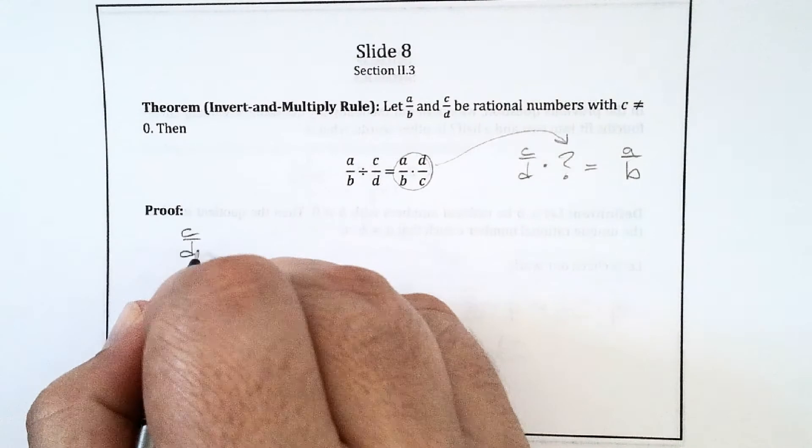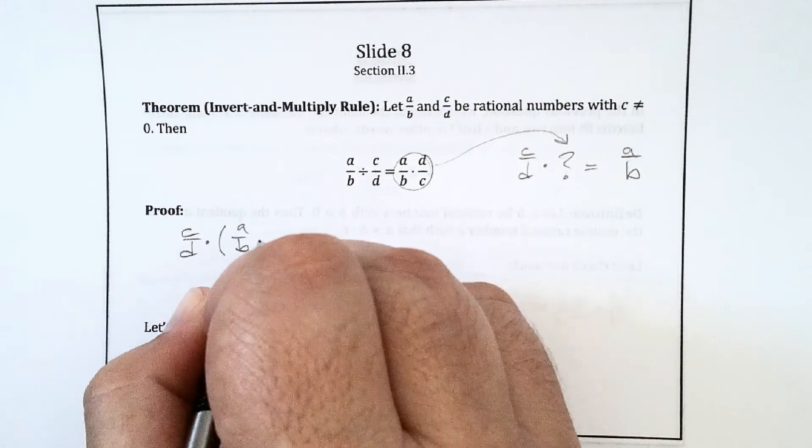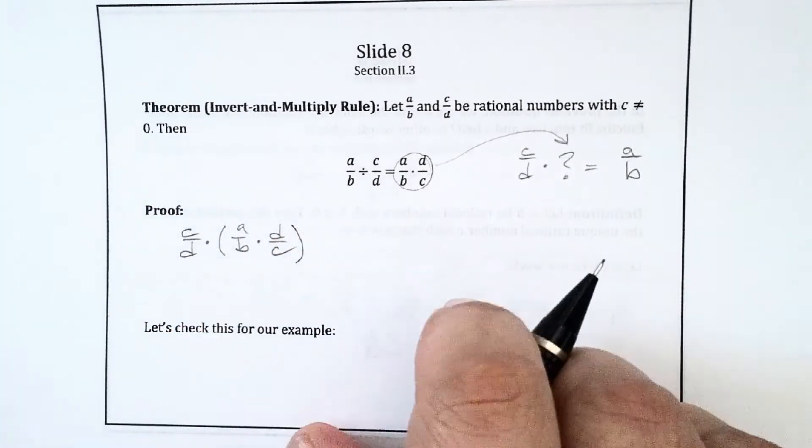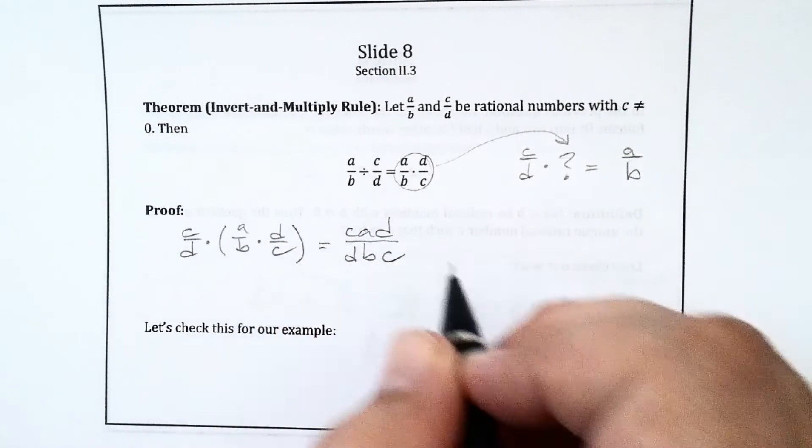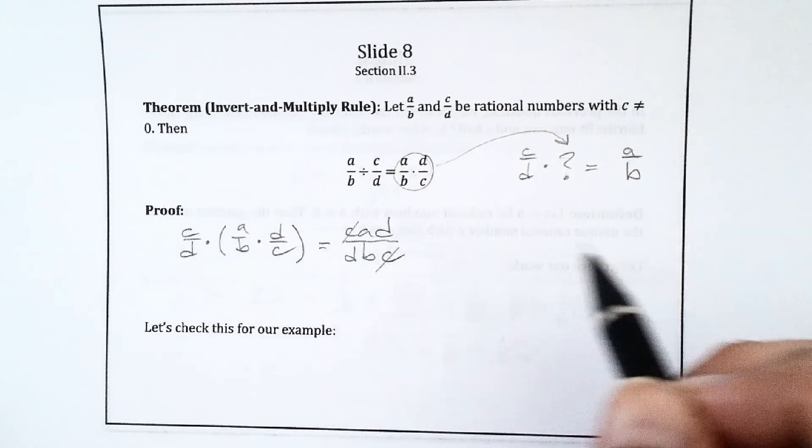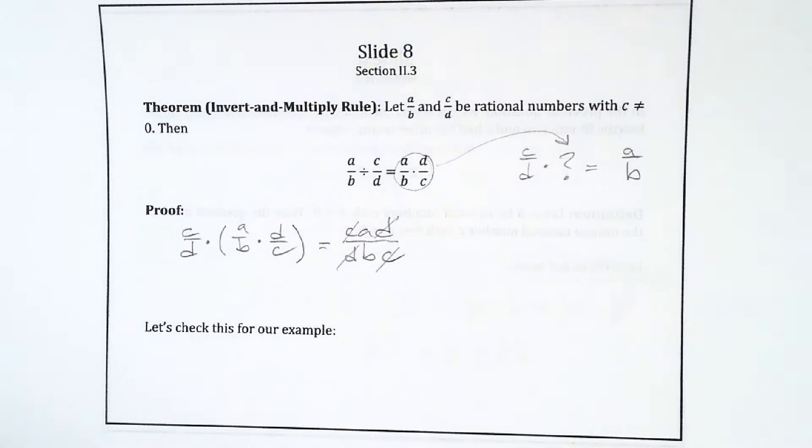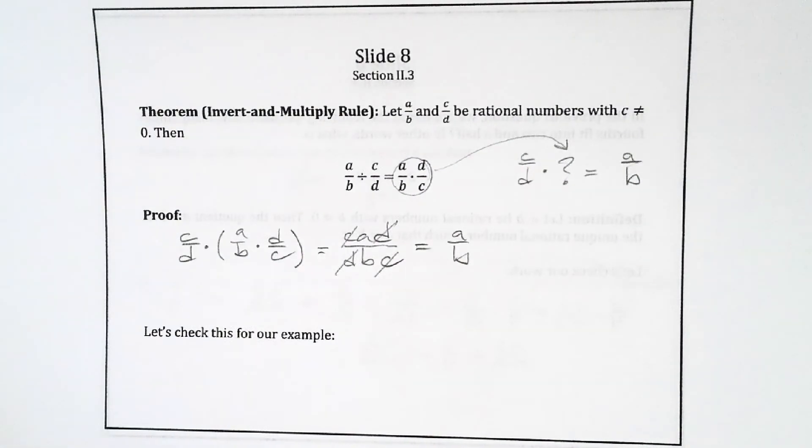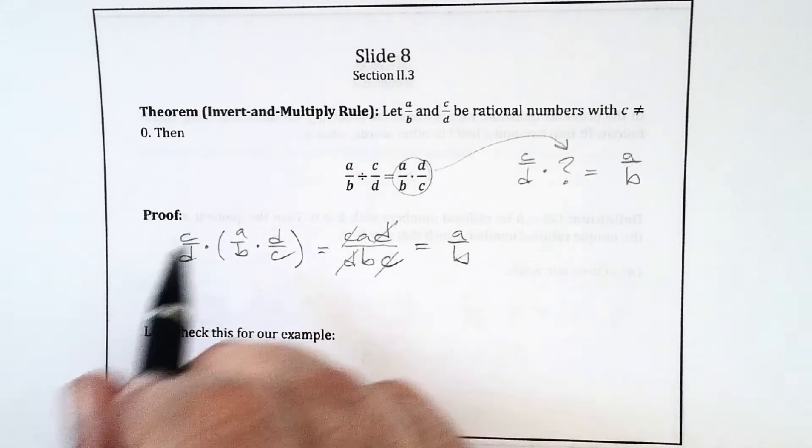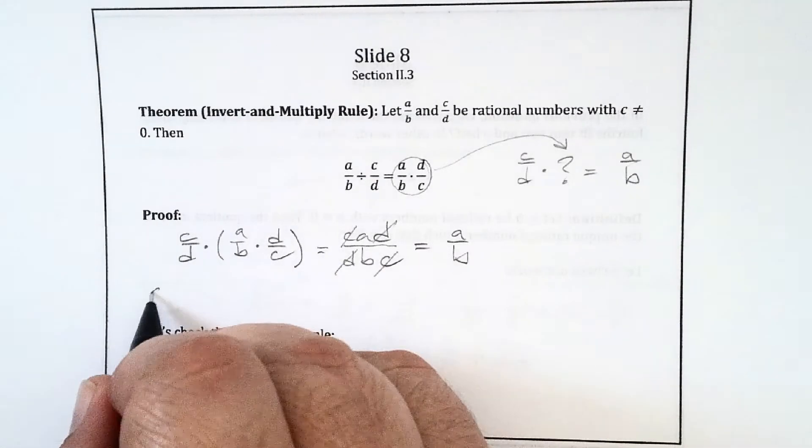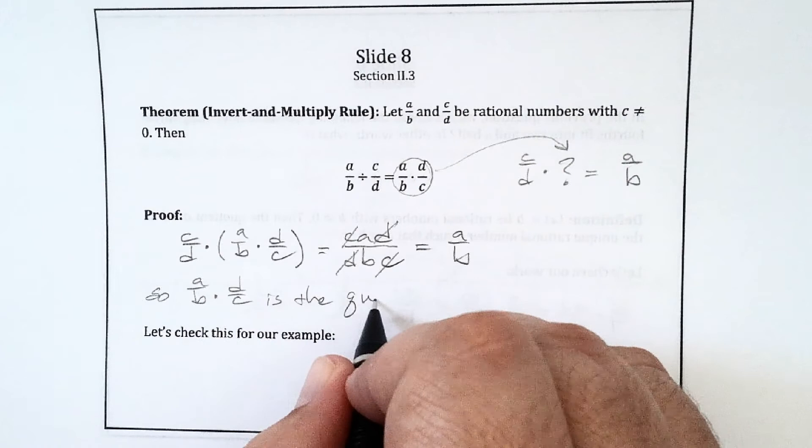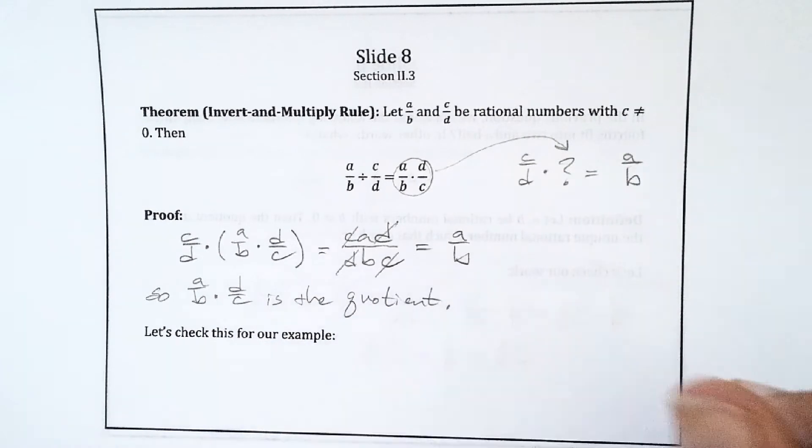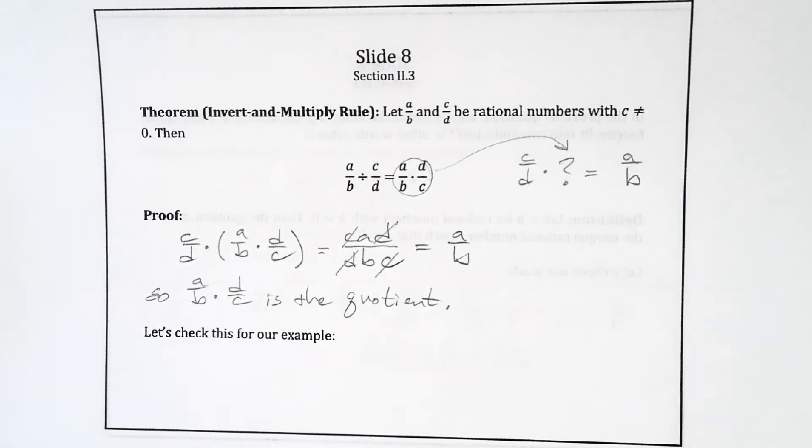So I just write C over D times A over B times D over C. After I multiply this all out, I have C times A times D over D times B times C. And fundamental law of fractions means that I can get rid of the D's and the C's. That leaves me with A over B, which proves that that is the quotient. Okay, so A over B times D over C is the quotient because it fills in the blank.